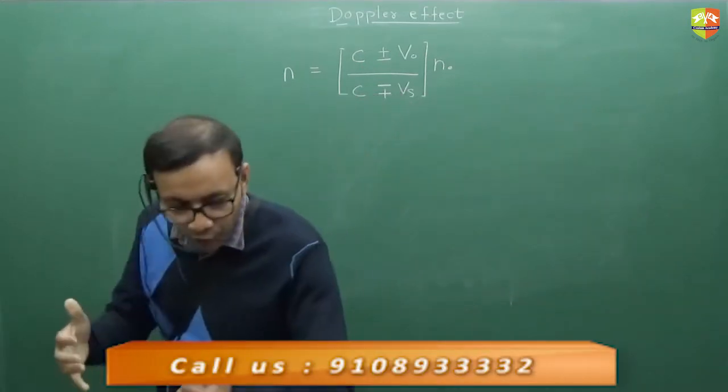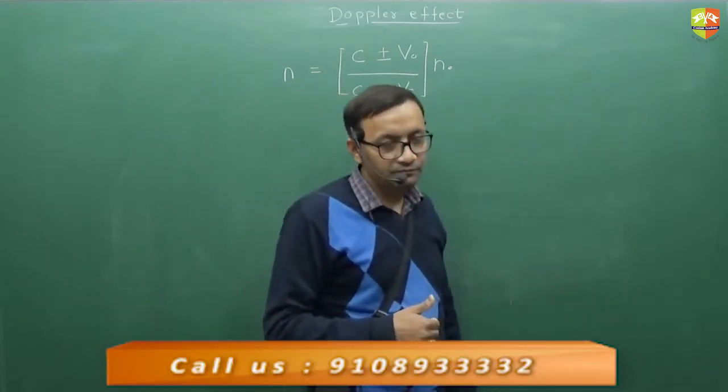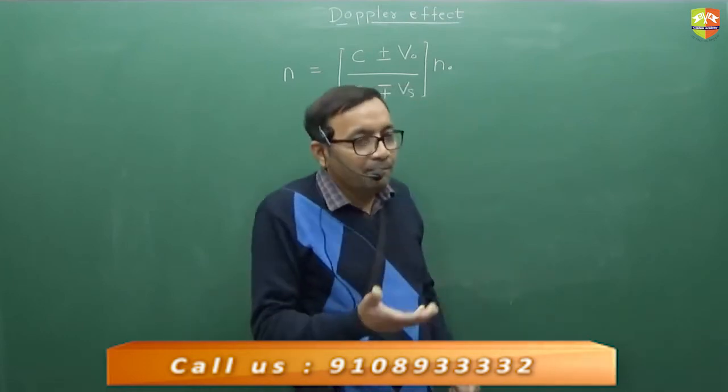So, if source comes towards the observer, it will be c minus vs in the denominator. And if it goes away, it will be c plus vs.